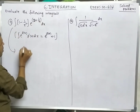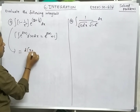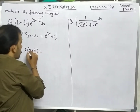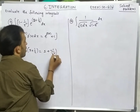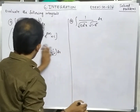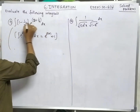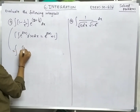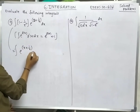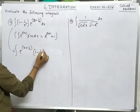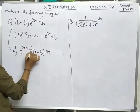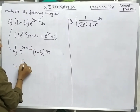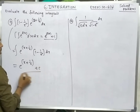The derivative of x + 1/x is: derivative of x is 1, and derivative of 1/x is -1/x². So this is clearly of the form e^(x+1/x) · (1 - 1/x²) dx, which is e^(f(x)) · f'(x) dx. Therefore, the answer is e^(x+1/x) + c.